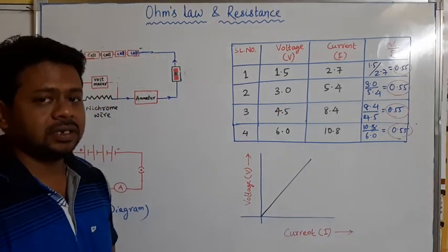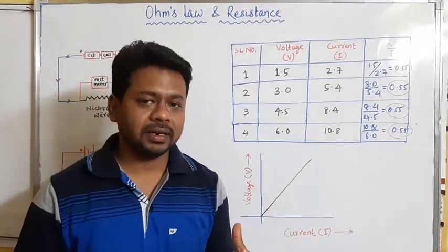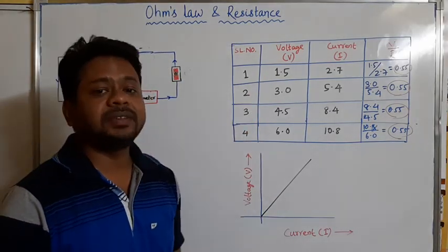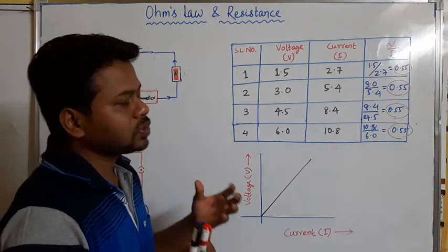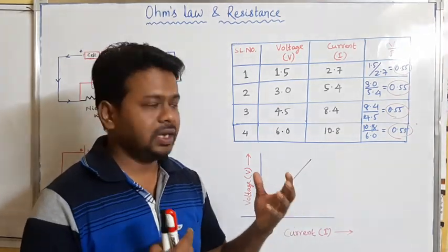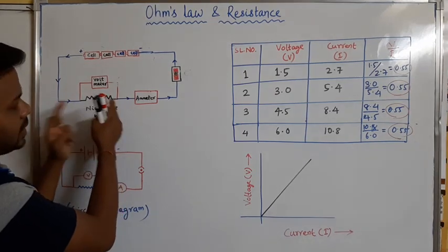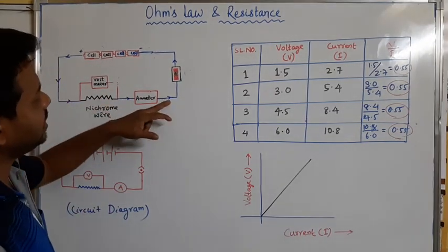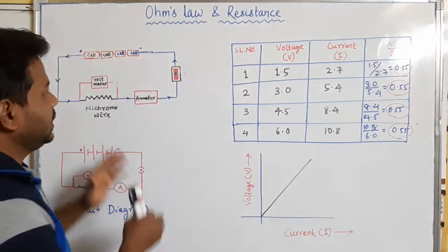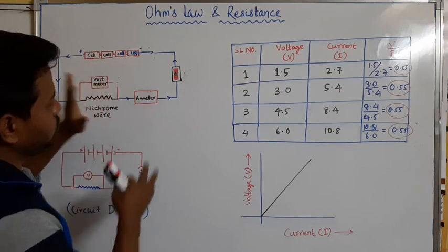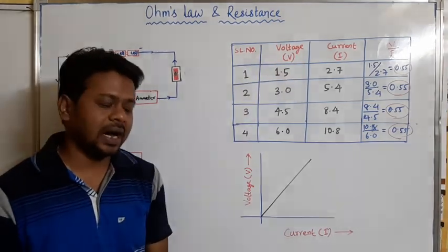This activity I have discussed was experimented by George Simon Ohm in 1827. After this experiment, he formulated a law which is known as Ohm's Law. Ohm's Law states that the voltage across a metallic wire is directly proportional to the current flowing through it, provided that the temperature remains constant. At constant temperature, V is directly proportional to I.